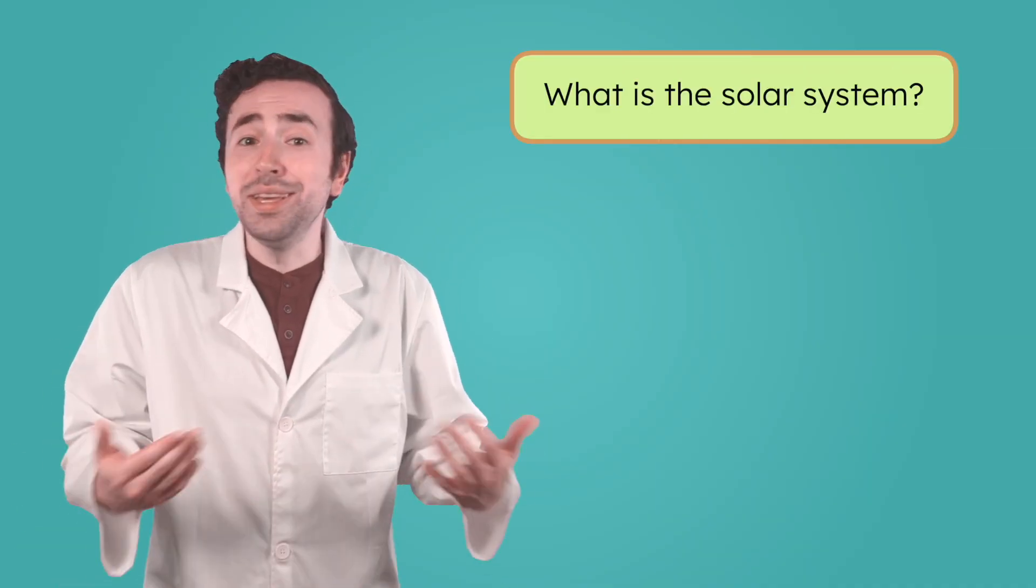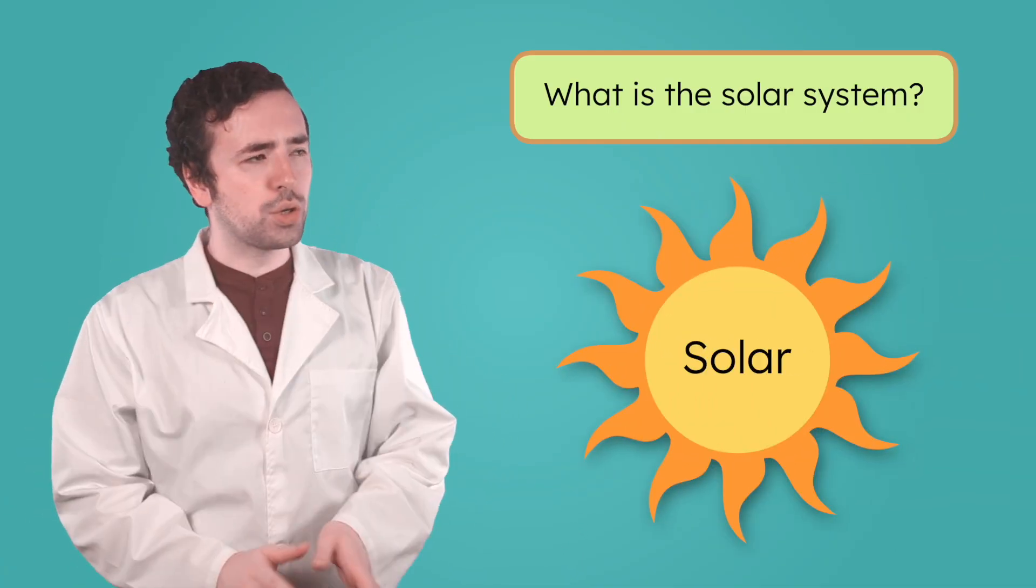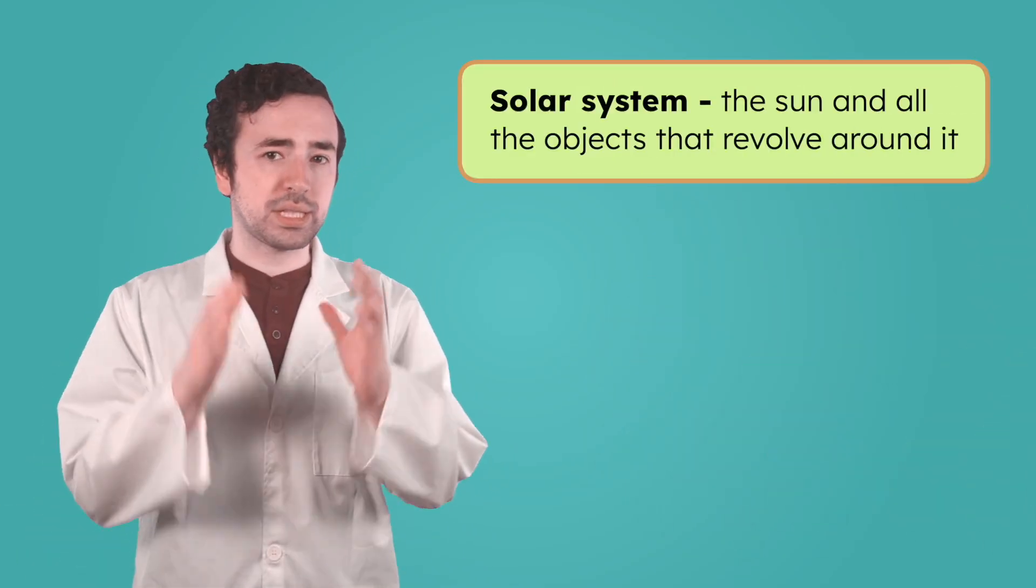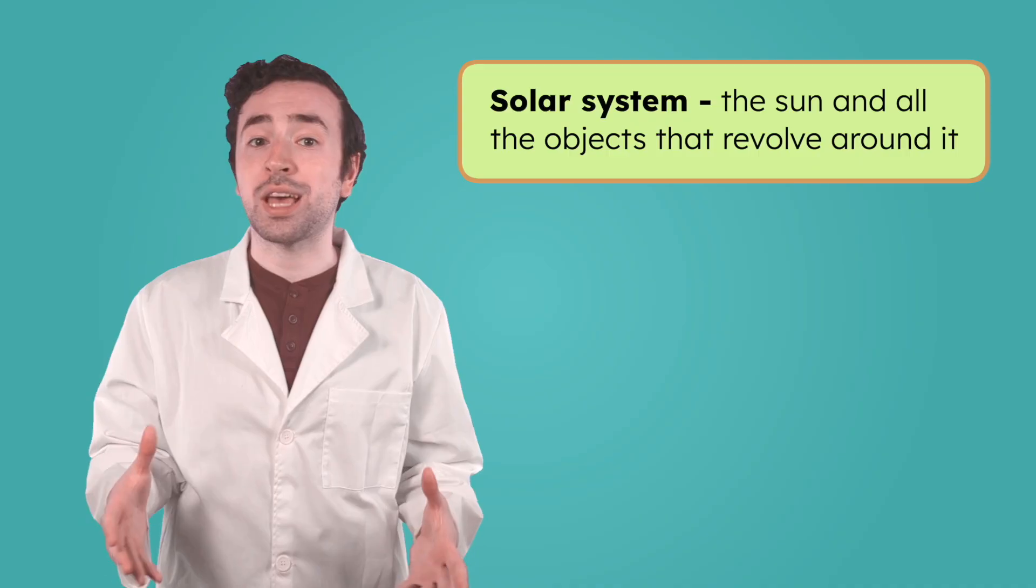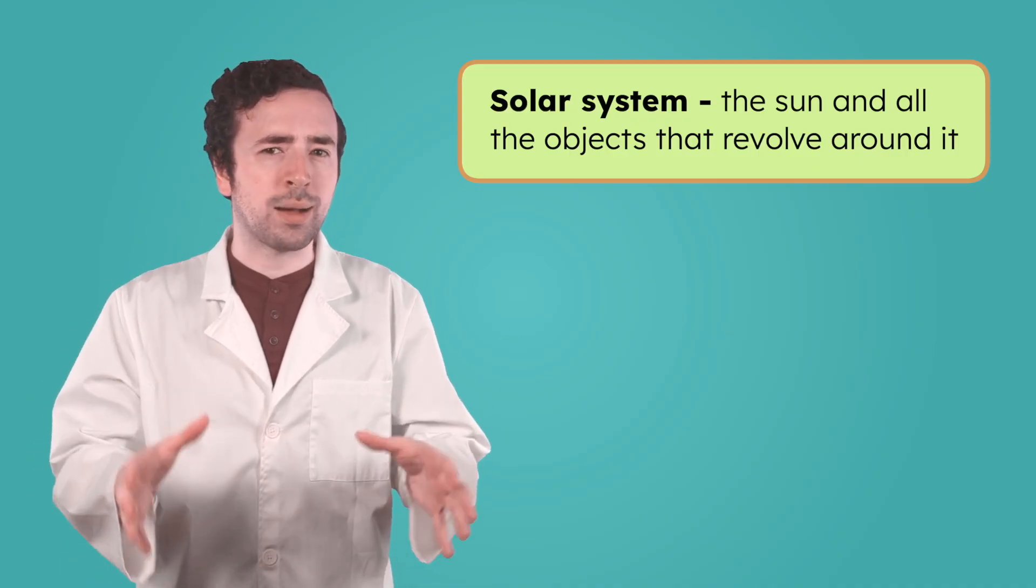Before we figure out what keeps everything moving in our solar system, we need to know what's actually out there. What is the solar system anyway? Well, the word solar means sun, so yeah, the sun is definitely a key player. The solar system is the sun and all of the objects that revolve or move around it. But what are those objects exactly?